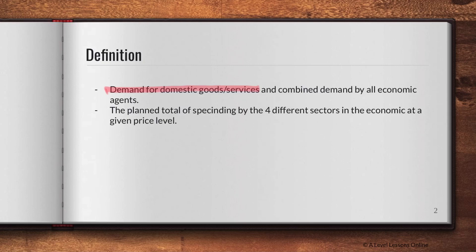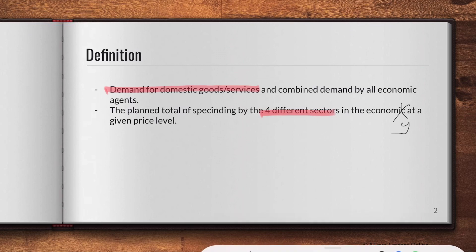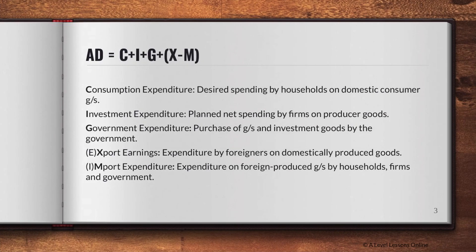AD is the plan total spending by the four different sectors in the economy at a given price level. When you look at this definition, it's kind of like putting the graph into words — you're looking at total spending by the four different sectors. I've already gone through what those four sectors are in the previous video on circular flow of income, so go back and take a look if you need to.